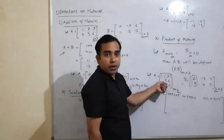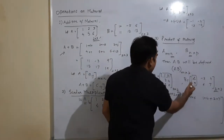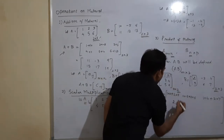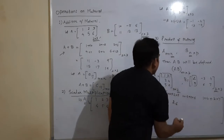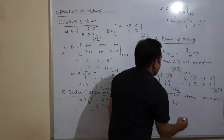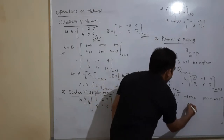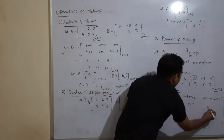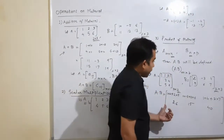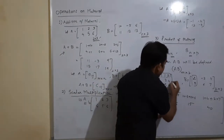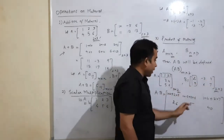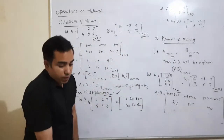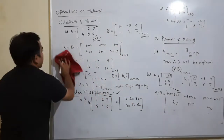For the second row, take row 2 of A [3 4] and multiply with each column of B: (3×2)+(4×5) = 6+20 = 26; (3×(−3))+(4×6) = −9+24 = 15; (3×4)+(4×7) = 12+28 = 40. For the third row, take [5 6] and multiply with each column of B and write the entries. This is the way we write matrix AB.